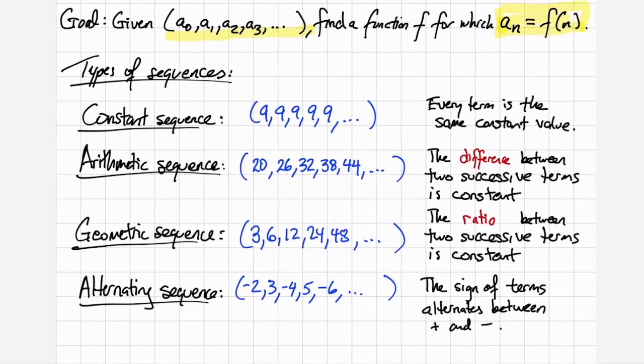We'll be focusing mainly on sequences that are constant sequences like 9 9 9 9 9 where every term is the same constant value. On arithmetic sequences like this one 20 26 32 38 44 where the difference between two successive terms is always the same. From 20 to 26 we add 6. From 26 to 32 we add 6. From 32 to 38 we add 6 and so on.